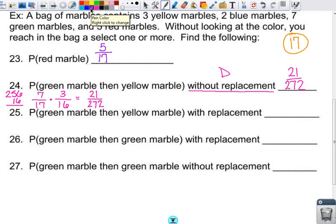All right. So then probability of a green marble, then yellow marble with replacement, is that dependent or independent? Independent, right? Because you put it back, so it doesn't really matter what you got the first time. So again, two events.